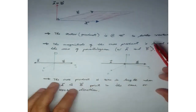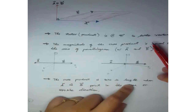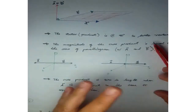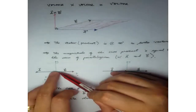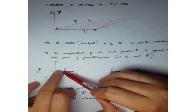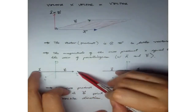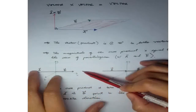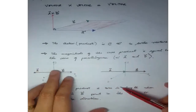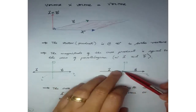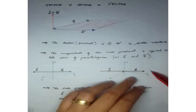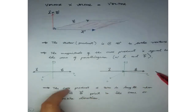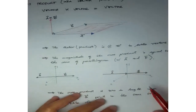The cross product is zero in length when A and B point in the same or opposite directions. If vector A and vector B point in opposite directions along the same axis, the cross product is zero. Similarly, if they point in the same direction along the same axis, the cross product is also zero.